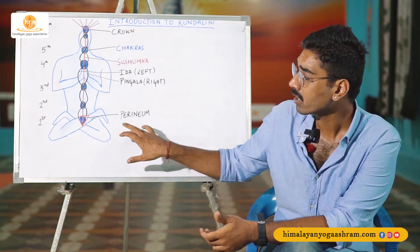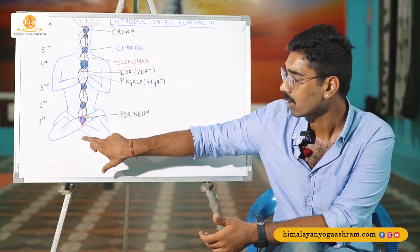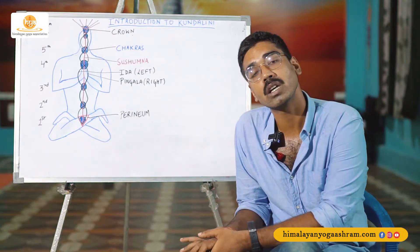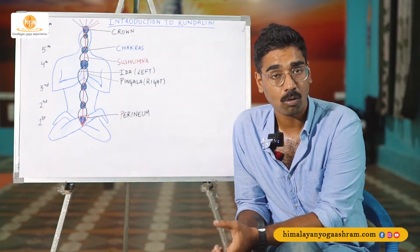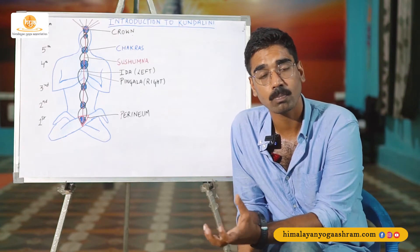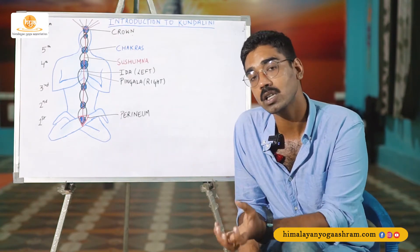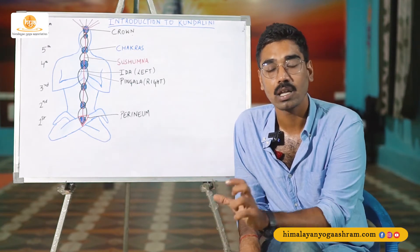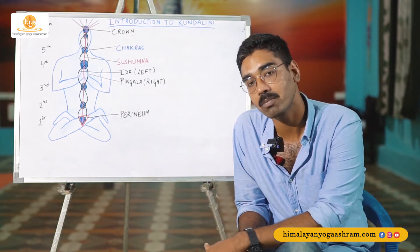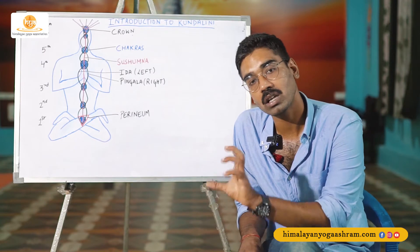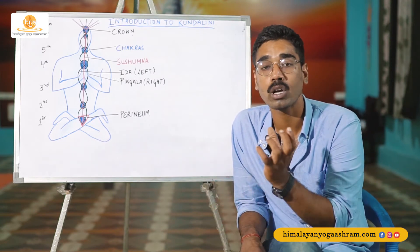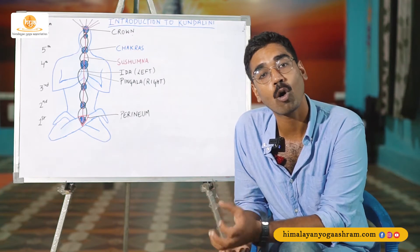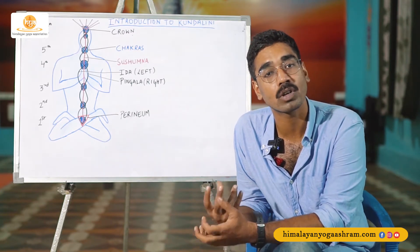By looking at the diagram here, you can see that there is a small triangle placed in the bottom part of the body. This part of the body is called the perineum. The perineum is the space between the anal sphincter of a human being and the genitals. That blank space which lies between the anal sphincter and the genitals is called the perineum region, and it is considered the source of all the energy that comes from within you.